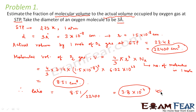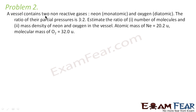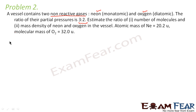Now let us look at problem 2. A vessel contains two non-reactive gases — neon and oxygen. The ratio of their partial pressures is 3:2. Estimate the ratio of number of molecules and mass density of neon and oxygen in the vessel. Atomic mass of neon is 20.2 atomic mass unit and molecular mass of oxygen is 32 atomic mass unit. The key point is that non-reactive gases are ideal gases, so this mixture satisfies Dalton's law of partial pressure.